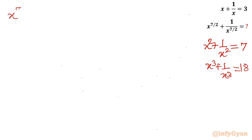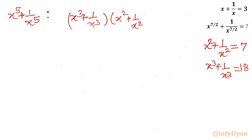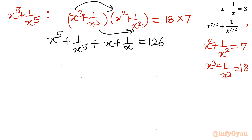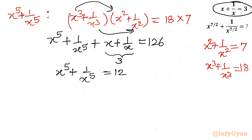Now I need to find x power 5 plus 1 over x power 5. I will take the product of x cube plus 1 over x cube times x square plus 1 over x square, giving 18 times 7 equals 126. Expanding the LHS, I get x power 5 plus 1 over x power 5 plus the cross product x plus 1 over x equal to 126. That cross product is 3, so x power 5 plus 1 over x power 5 equals 126 minus 3, which is 123.